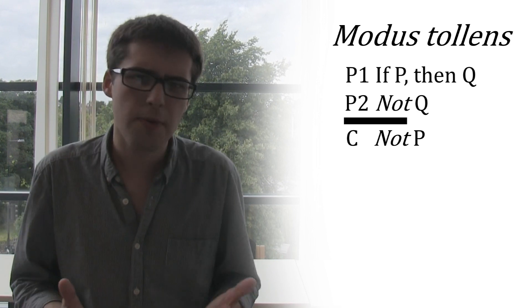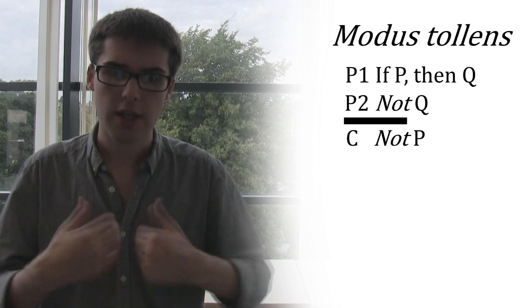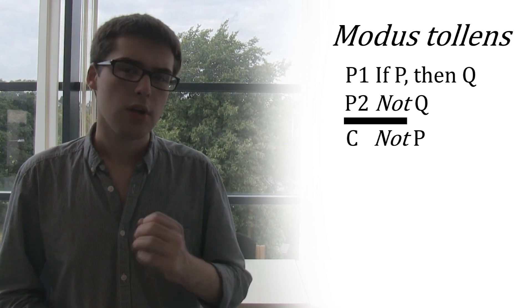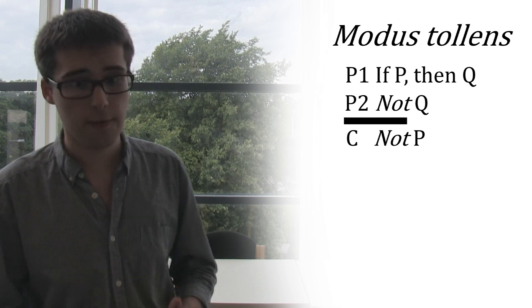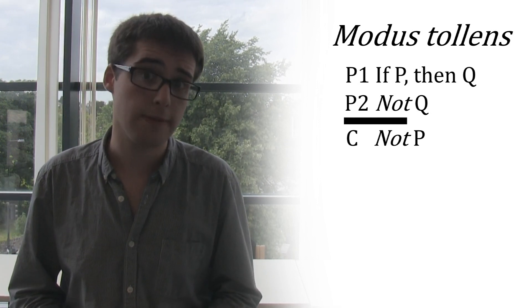Again, the truth of P and Q don't matter. It's the form that's important to deductive validity. So an argument is deductively valid in modus tollens form, even if what we put in place of P and Q are false.